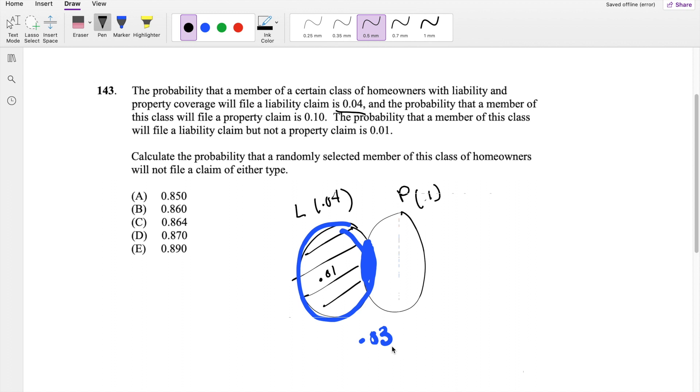Okay, so then if we know that the center part is 0.03, we don't want to overlap twice, we don't want to count the same thing twice, so we're just going to take 0.03 out from the property total. So you get just this red part, just this red part not including the center, it's going to be 0.07.